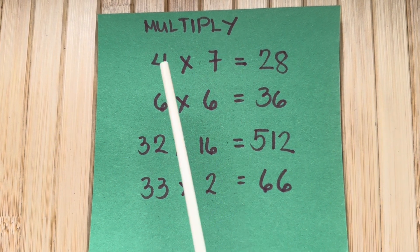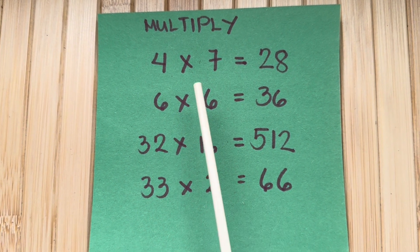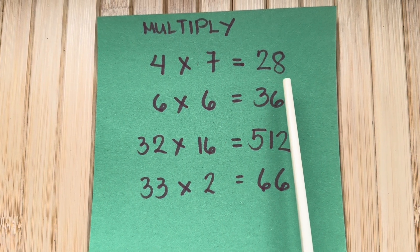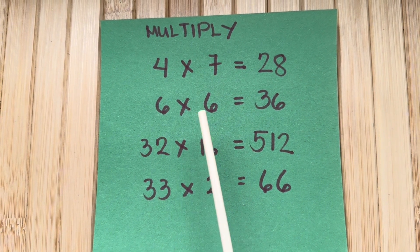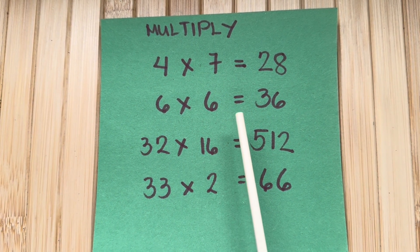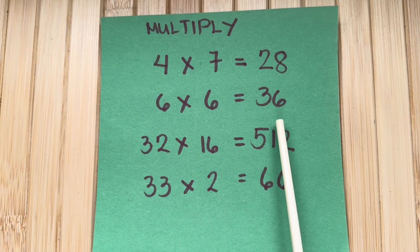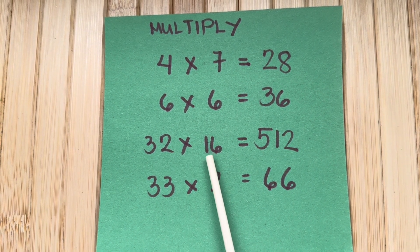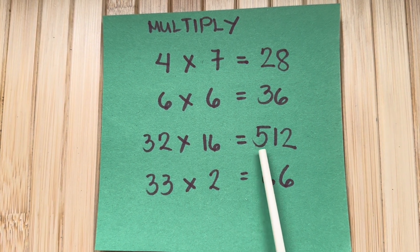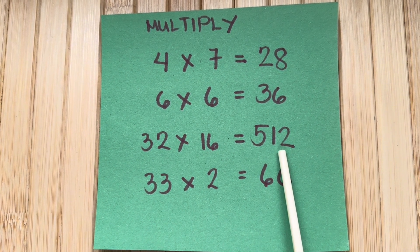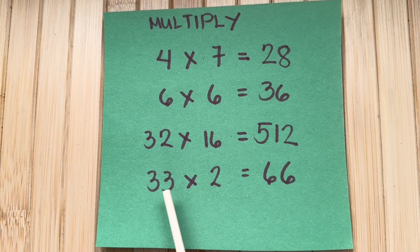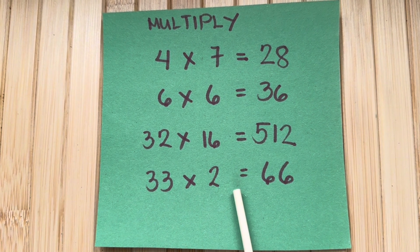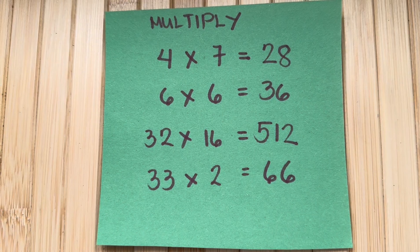Let's multiply. 4 times 7 is equals to 28. 6 times 6 is equals to 36. 32 times 16 is equals to 512. And lastly, 33 times 2 is equals to 66.